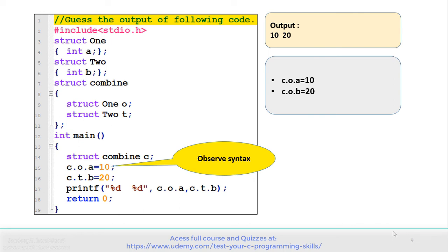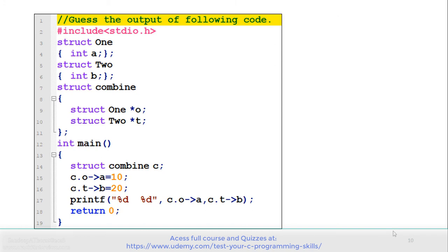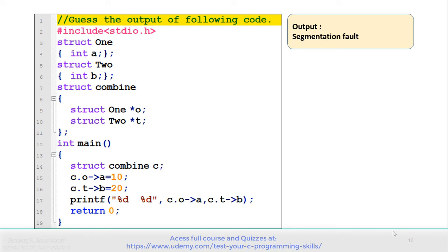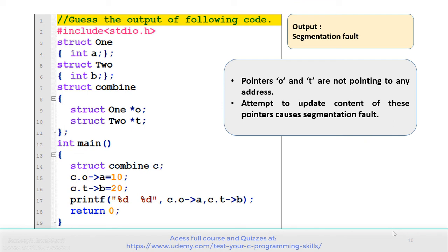Let's move to the next example. See the code carefully and gauge the output. This program is similar to the previous one. The only difference is on line numbers 9 and 10, where o and t are not normal variables but pointers. Lines 15 and 16 assign values to a and b using o and t, which are pointers, so the arrow operator is used. Line 17 displays these values. The output is a segmentation fault because pointers o and t are not pointing to any address, so attempting to update their content causes a segmentation fault.